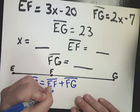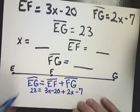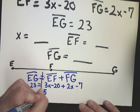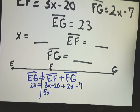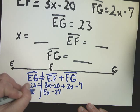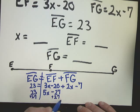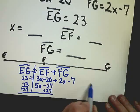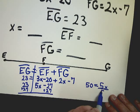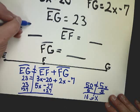EG is 23. EF is 3X minus 20 plus FG is 2X minus 7. Combine like terms 3X plus 2X is 5X. Negative 20 minus 7 should give me negative 27. I have 23 over here. I need to add 27 to both sides. So I get 50 equals 5X divide by 5. So X is equal to 10. So I can put that answer right there.